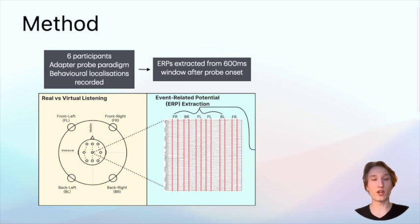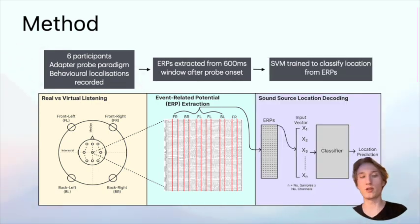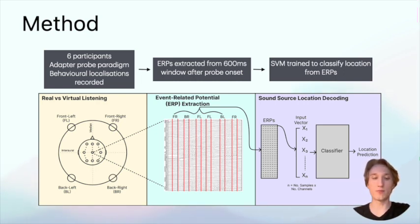We recorded 64 channel EEG and obtained ERPs by extracting 600 millisecond windows post-probe onset from each electrode. And we then trained a support vector machine to classify between pairs of sound locations which were symmetrical around either the median plane or the interaural plane based on these ERPs. And then we compared the decoding accuracy between spatial locations and conditions.